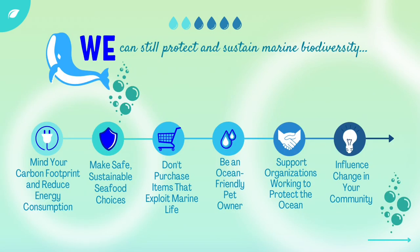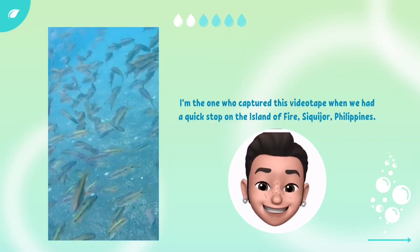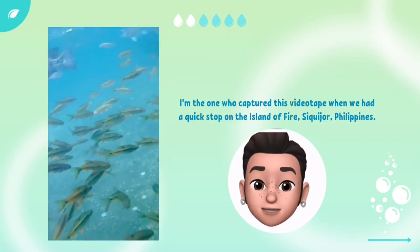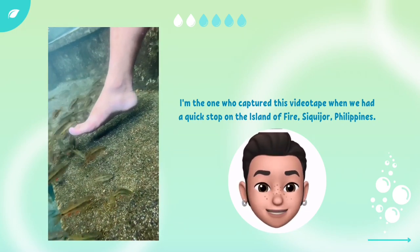We can protect and sustain marine biodiversity. Here are things we can do to save the ocean: mind your carbon footprint and reduce energy consumption; when shopping or dining out, choose seafood that is both helpful and sustainable to help reduce demand for over-exploited species; don't purchase items that exploit marine life or contribute to harming fragile coral reefs; be an ocean-friendly pet owner; and support organizations working to protect the ocean. This clip explains how abundant aquatic biodiversity is in Siquijor, where people strive to preserve and protect it as a local treasure that brings pride to their tourism ventures.